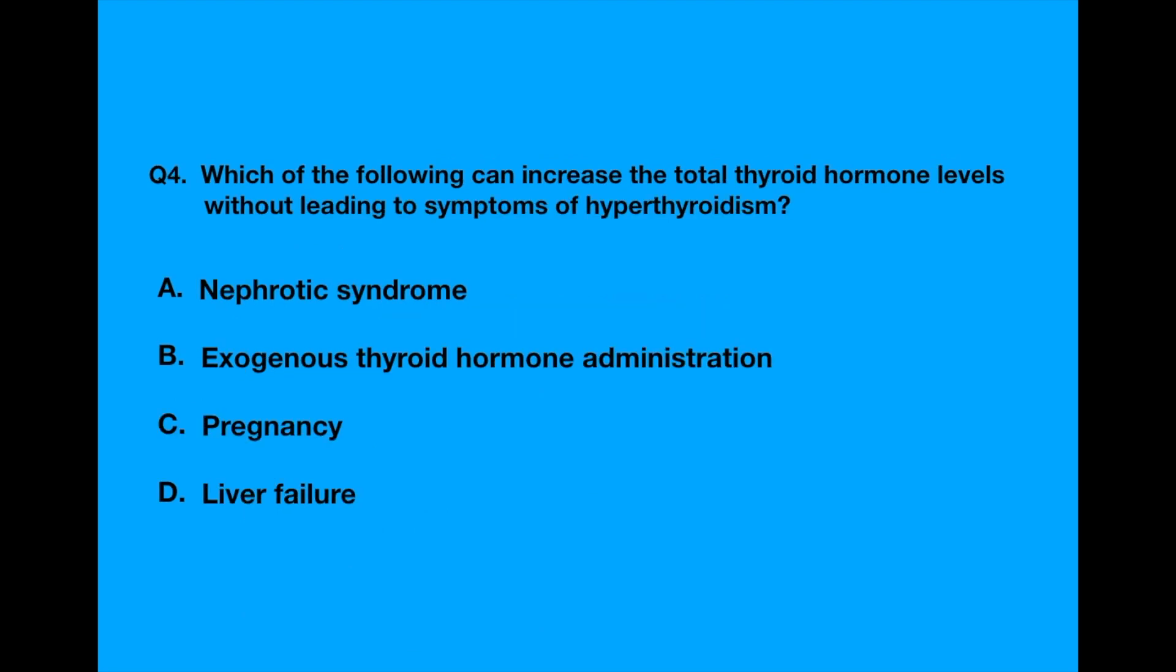Question number four. Which of the following can increase the total thyroid hormone levels without leading to symptoms of hyperthyroidism? Option A, nephrotic syndrome. Option B, exogenous thyroid hormone administration. Option C, pregnancy. Option D, liver failure.